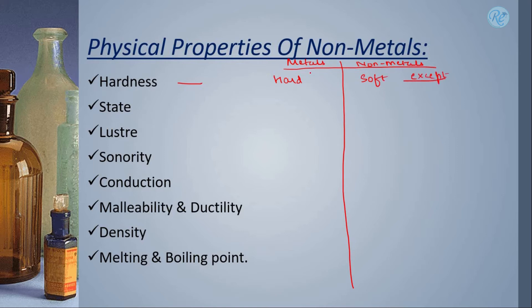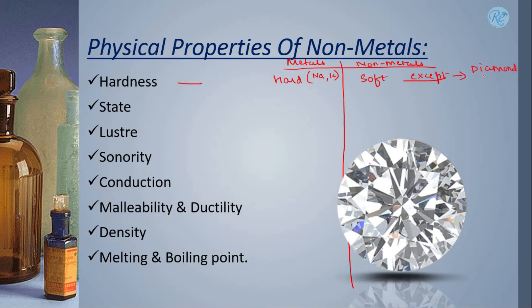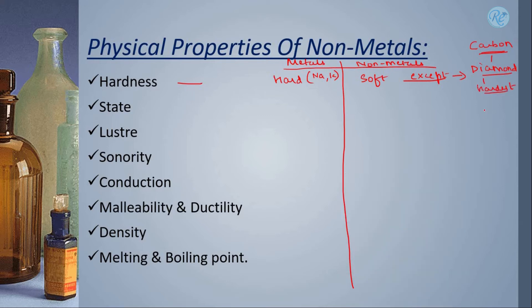Just like we saw that sodium and potassium are exceptions in case of metals, similarly, here also we have a great exception that is diamond. Now, you all know that diamond is an allotrope of carbon which is a non-metal but is extremely hard. In fact, this is the hardest and so this becomes an exception.